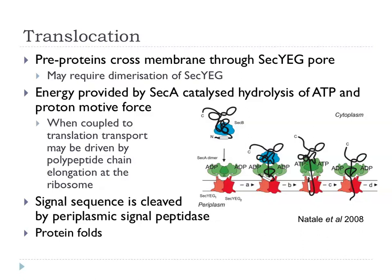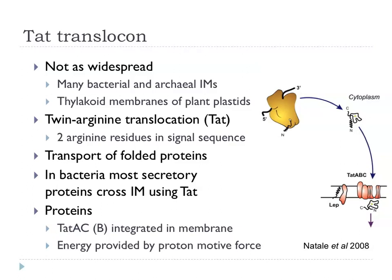The Sec translocon is the most widely used translocon for getting proteins across the cytoplasmic membrane. But in the last 10 to 15 years there has been a lot of interest in a newly described translocon known as the TAT translocon. It's not quite as widespread — it is found in many bacterial and archaeal membranes, and is found in some plastids as well.